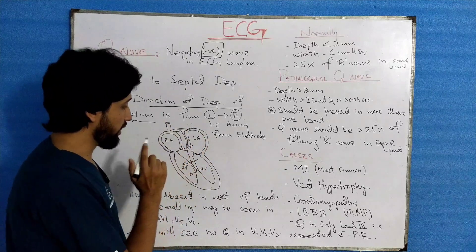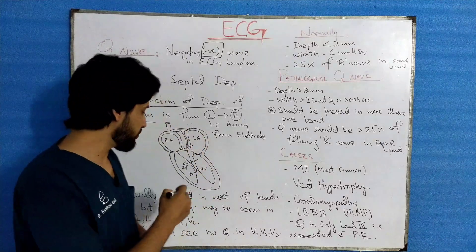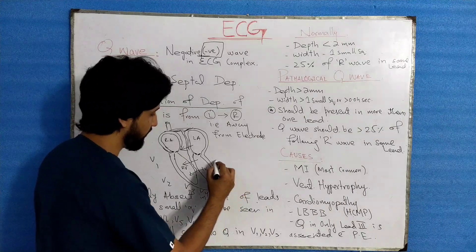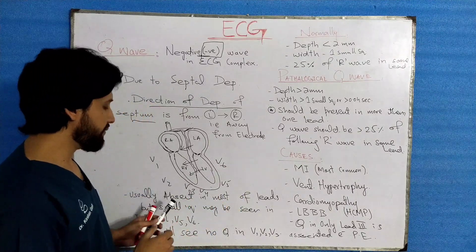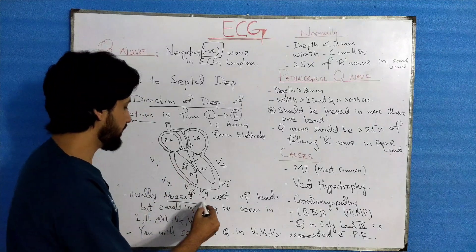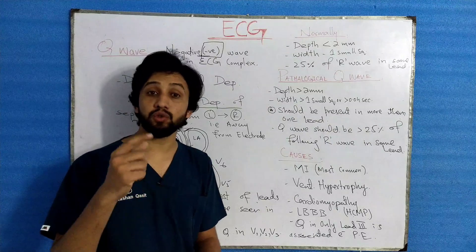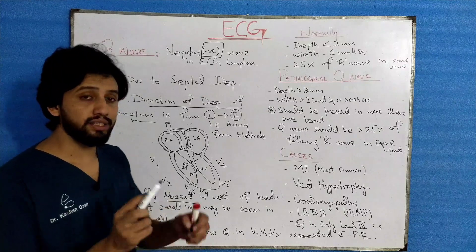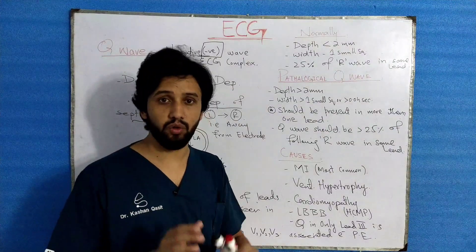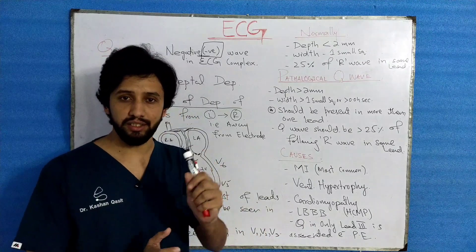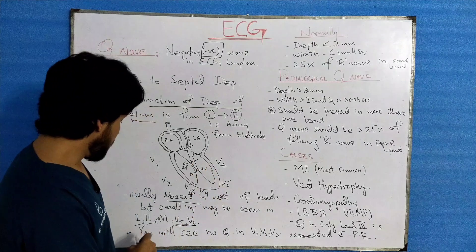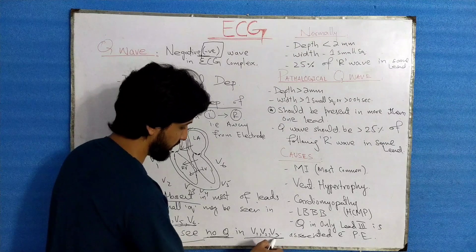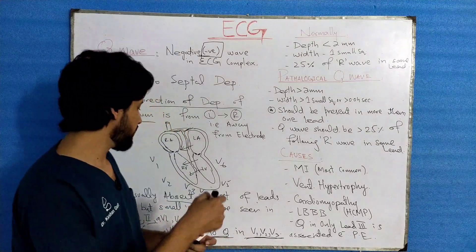This is the structure of the normal heart. When you place the leads, V1 is placed here, then V2, V3, V4, V5, and V6. Usually this Q wave will be absent in most leads, but a small Q wave can also be seen in lead I, aVL, V5, and V6 — seen but in a negative direction on the ECG paper. There is no Q wave seen in V1, V2, and V3.